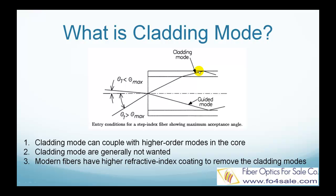The cladding has an interface with the outer coating layer. Some of this light will be reflected back into the cladding at the cladding and coating interface, and it can then be trapped and propagate within the cladding. These are called cladding modes.